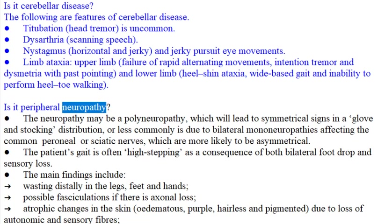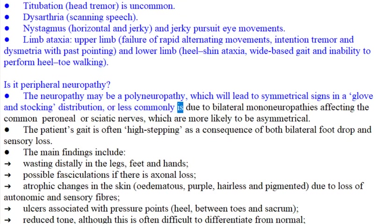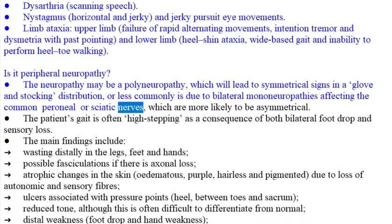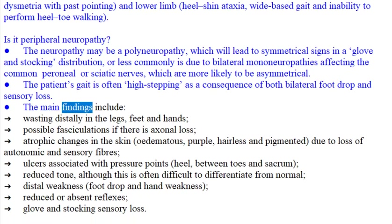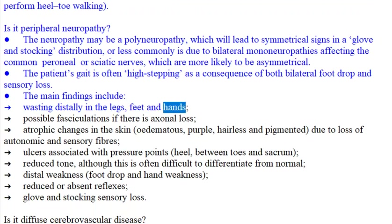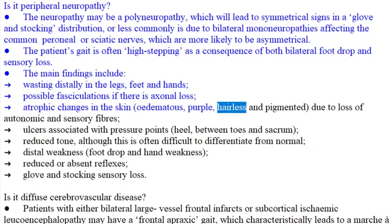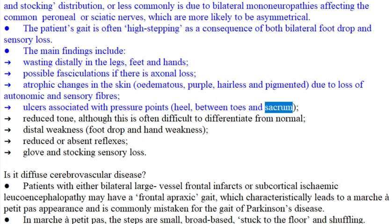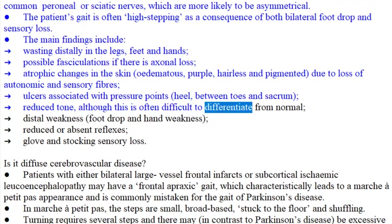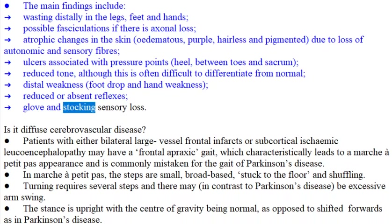Is it peripheral neuropathy? The neuropathy may be a polyneuropathy, which will lead to symmetrical signs in a glove and stocking distribution, or less commonly is due to bilateral mononeuropathies affecting the common peroneal or sciatic nerves, which are more likely to be asymmetrical. The patient's gait is often high-stepping as a consequence of both bilateral foot drop and sensory loss. Main findings include: distal wasting in legs, feet and hands; possible fasciculations if there is axonal loss; atrophic skin changes, edema, purple, hairless and pigmented skin due to loss of autonomic and sensory fibers; ulcers at pressure points including heel, between toes and sacrum; reduced tone; distal weakness including foot drop and hand weakness; reduced or absent reflexes; and glove and stocking sensory loss.